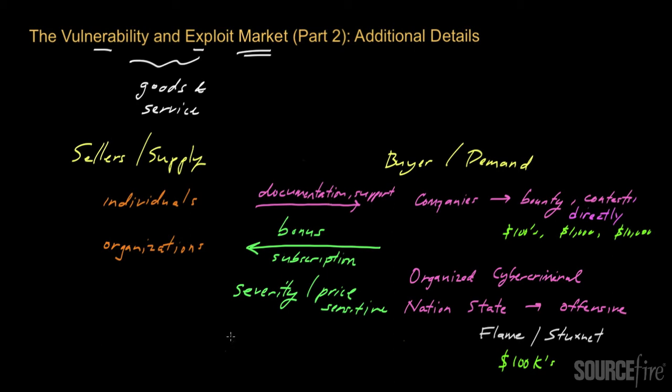On a related note, sellers have to deal with the challenge of how to disclose information about their vulnerabilities to buyers without actually incurring a loss in the process. A vulnerability is an intangible piece of detail regarding a particular software application. The seller has to somehow convince a buyer that they have a vulnerability worth buying, but in the process of perhaps revealing details about the vulnerability, the seller runs the risk that the buyer can fill in the remaining details on their own — in which case the buyer might decide not to pay the seller anything.